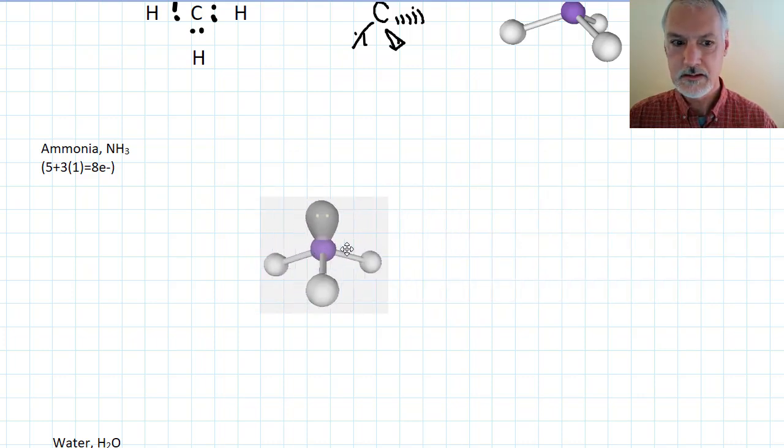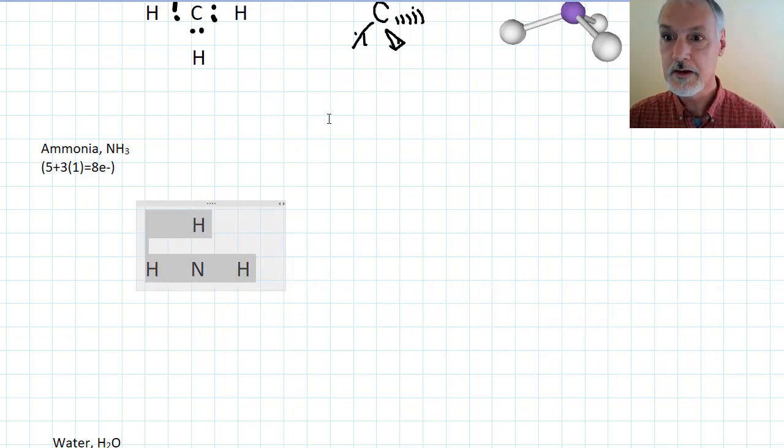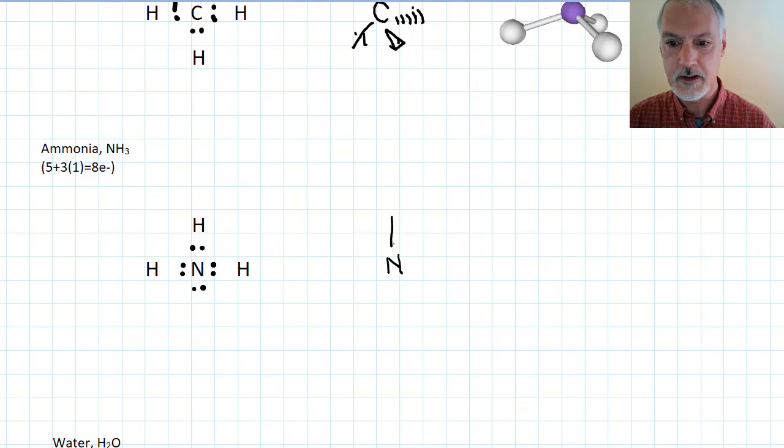All right, let's take a look at ammonia. It also has eight electrons. So again, I'll start by putting them at the bonding sites. I still have two left, so I'll put them out here. So this would be an example of a substance with a lone pair of electrons.